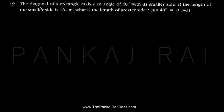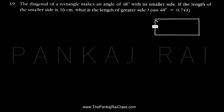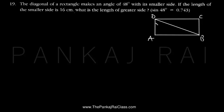The problem says that the diagonal of a rectangle makes an angle of 48 degrees with the smaller side. Let us first draw a rectangle and name it A, B, C, D. Now let us draw a diagonal DB. This is the diagonal, this is the smaller side, and this is the larger side. So the angle made with the smaller side is 48 degrees.